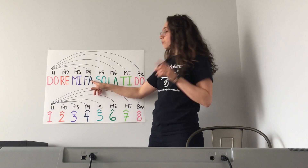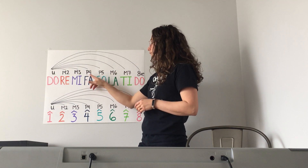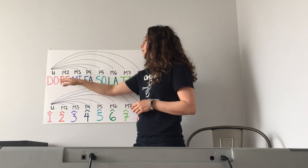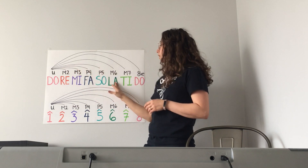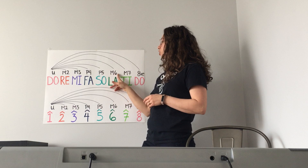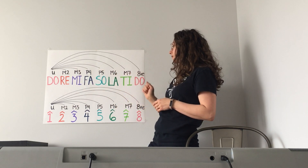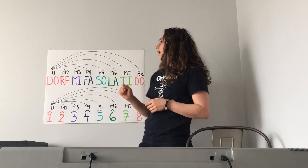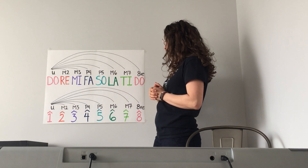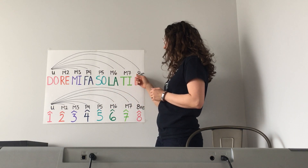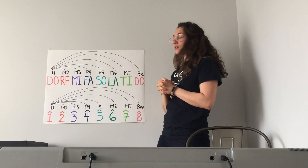Do to Fa is not major — it's a perfect fourth, so that's a capital P and then a four. Do to Sol is a perfect fifth, so capital P five. Do to La is a major sixth, capital M six. Do to Ti is a major seventh, capital M seven. And then Do to the high Do is an octave — that's written as eight and then V-E. Oct means eight in Latin, so that's why it's an eight.